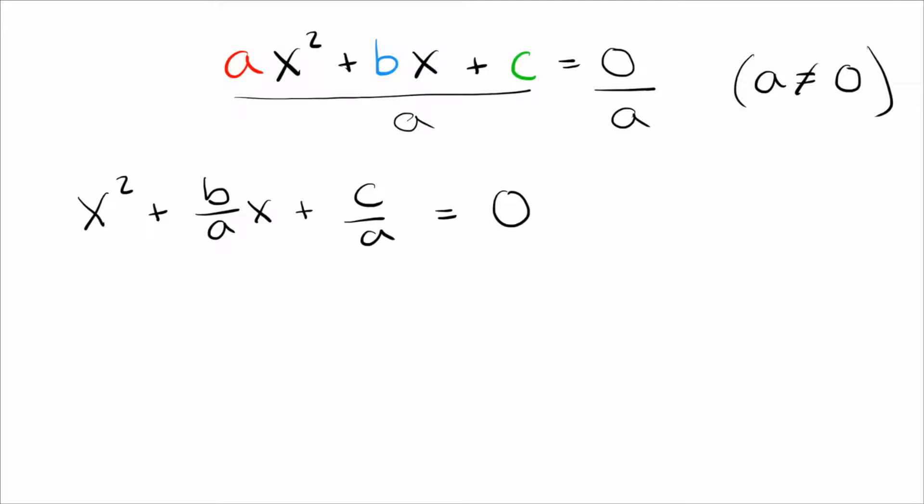Now with this, we want to complete the square. So remember, to complete the square, what you do is you take the number next to the x, b/a, and you take half of it. So if I take half of b/a, that's the same thing as b/(2a). That's what I'm going to go ahead and put inside here.